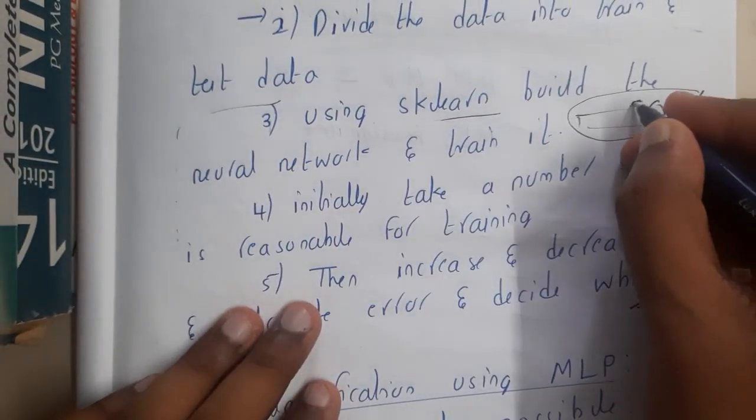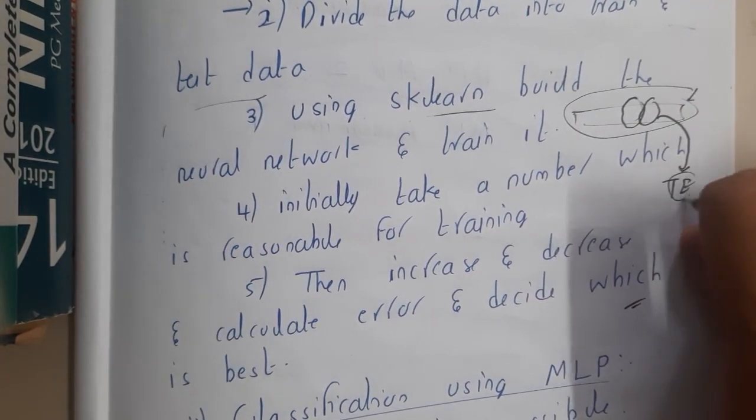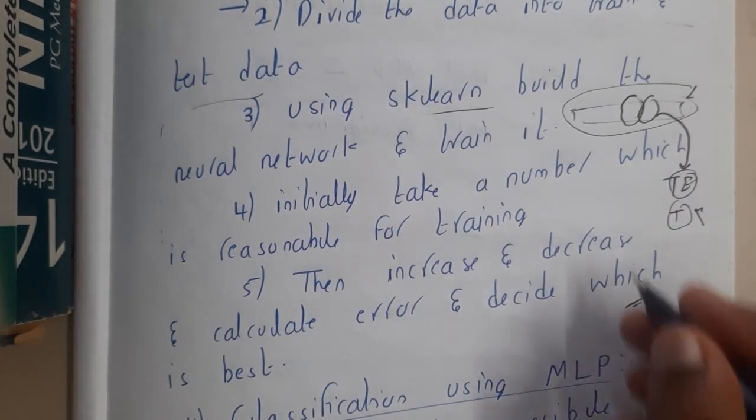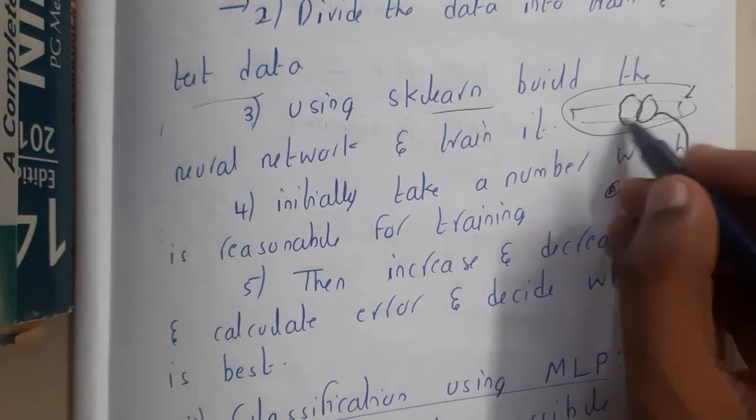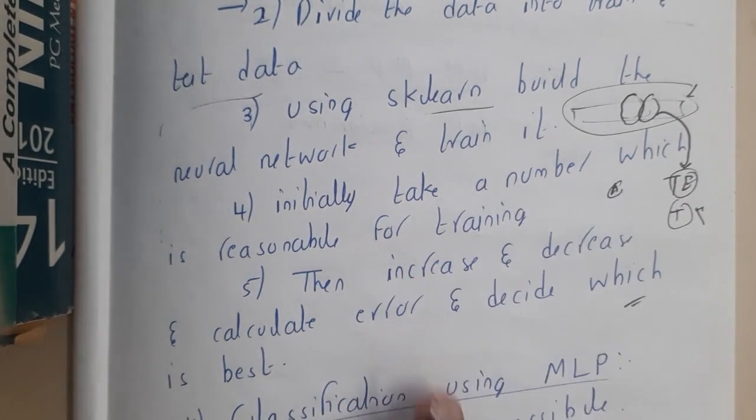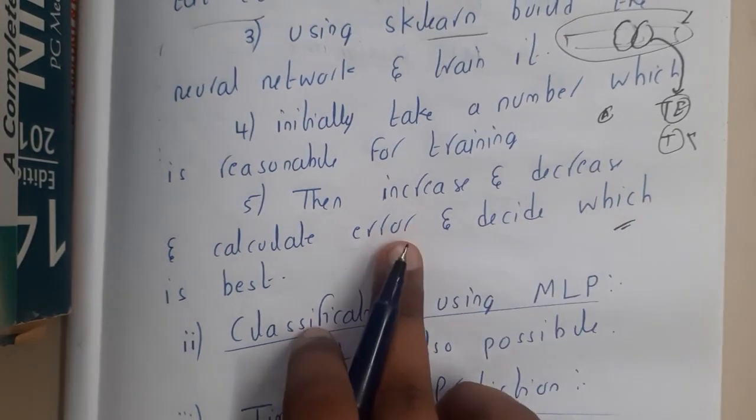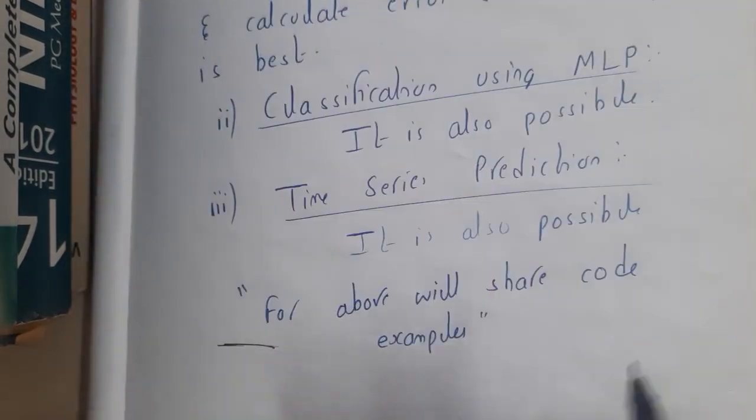One more thing is that we don't know exactly how many layers should be there and all those things. It is always a trial and error method. You will be giving the number randomly and you will be checking how accurately it is giving. If you think that accuracy is not good, you'll be changing the numbers, slightly changing them until you get a proper value where the error is really low. Then you will decide the best one. The three concepts will be the same.